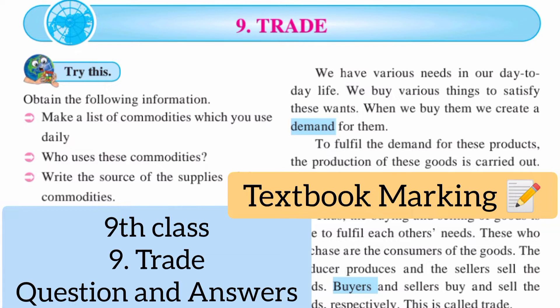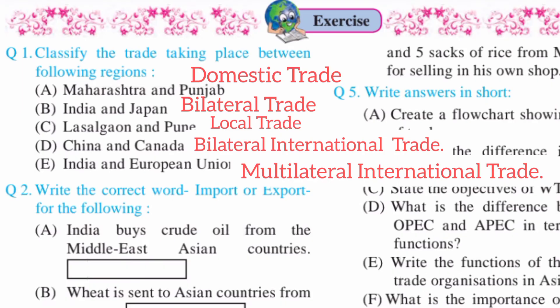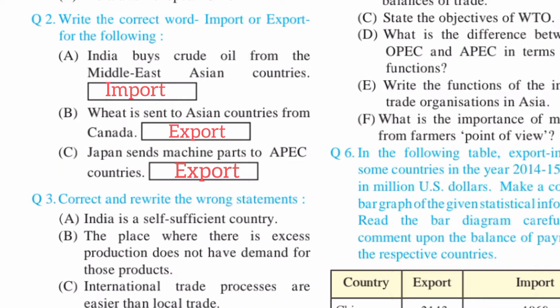Question number one: Classify the trade taking place between the following regions. A) Maharashtra and Punjab — domestic trade. B) India and Japan — bilateral trade. C) Lasalgaon and Pune — local trade. D) China and Canada — bilateral international trade. E) India and the European Union — multilateral international trade.